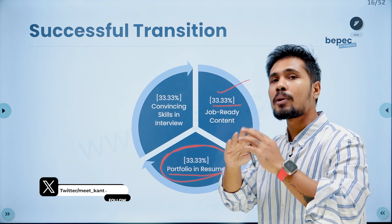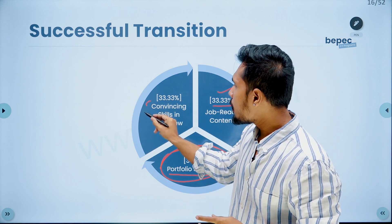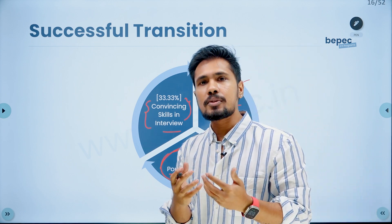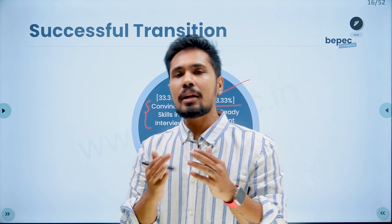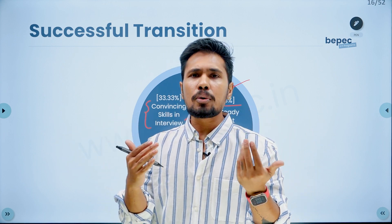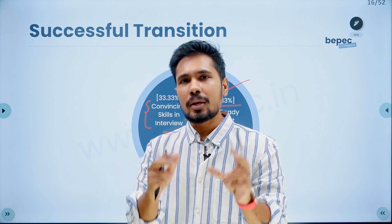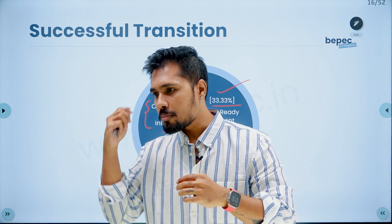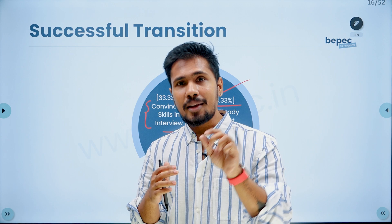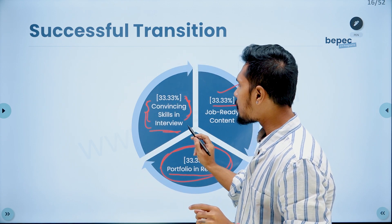So 33 plus 33 gives you 66% chances to crack an interview. The final 33% is how you speak in your interview — your convincing ability. You need to demonstrate confidence, answer questions convincingly, speak about your projects confidently, and convince them to hire you. That convincing skill in interviews is the last 33% weightage.